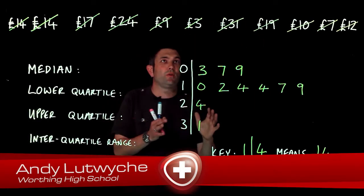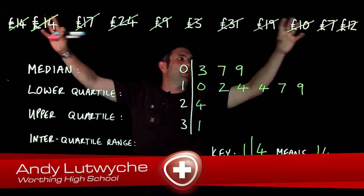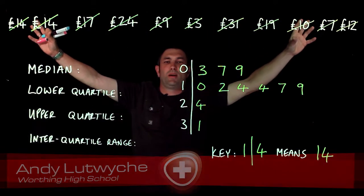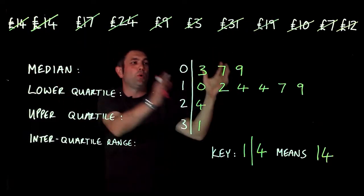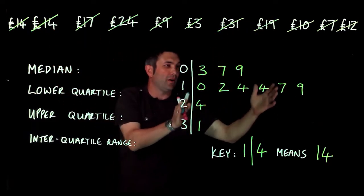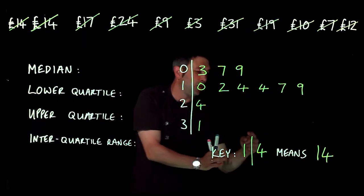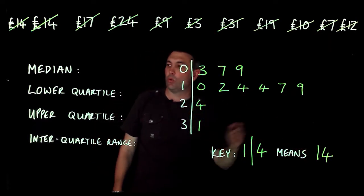In a previous video, we had all these values—the amount of money people spent on downloads in a month—and we put them in a stem and leaf diagram. The key shows that 1/4 means 14.